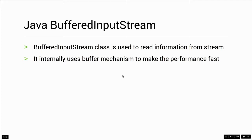First, BufferedInputStream is used to read information from a stream. In a file, it will reach the BufferedInputStream. It uses a buffered mechanism to make the performance fast.